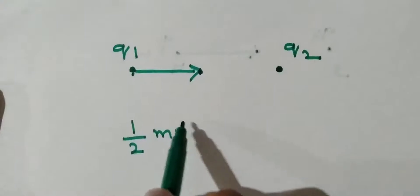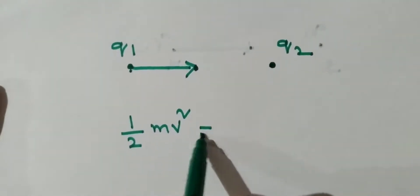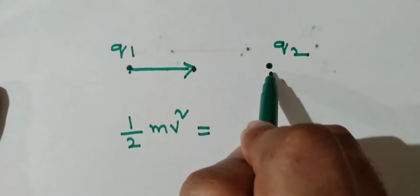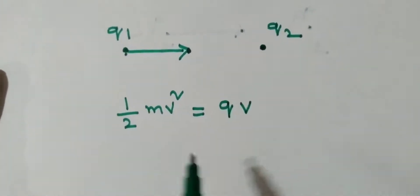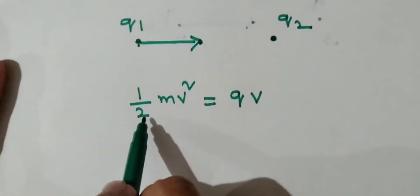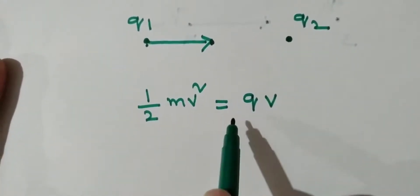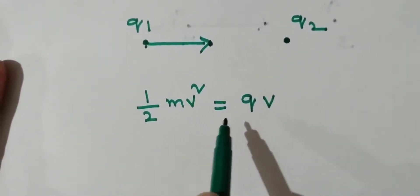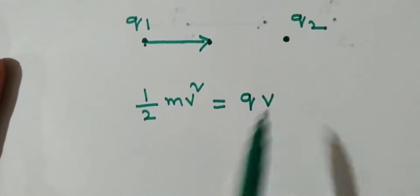The moving electron has kinetic energy of mv square, where v is velocity. The stationary electron has potential energy equal to Qv, where v is voltage. If kinetic energy is equal to the potential energy, the moving electron continues its momentum without deflection until kinetic energy equals the potential energy.